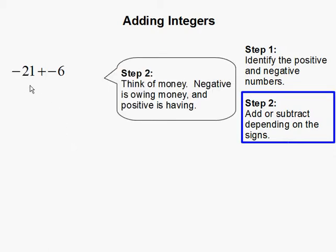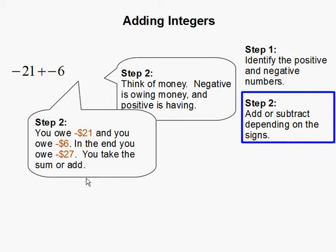Now let's think about this in terms of money. So negative is owing, and positive is having. So here we owe $21, and we owe $6. So in the end, you're going to owe even more money.